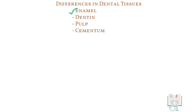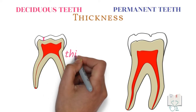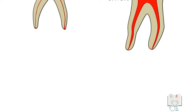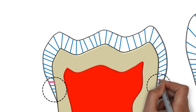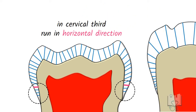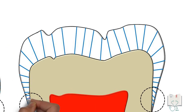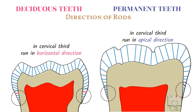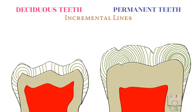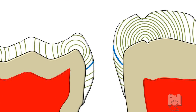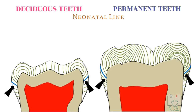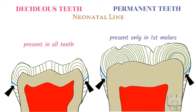Now let us see the differences in enamel. In deciduous teeth, enamel is thin as compared to that of permanent teeth. In deciduous teeth, in the cervical third, the enamel rods running from the dentino-enamel junction to the surface are oriented in a horizontal direction, whereas in permanent teeth they run in an apical direction. The incremental lines of enamel, or the striae of Retzius, are fewer in number in deciduous teeth than in permanent teeth. The accentuated incremental line called the neonatal line, seen in enamel and dentine, is present in all deciduous teeth but in permanent dentition is present only in first molars.